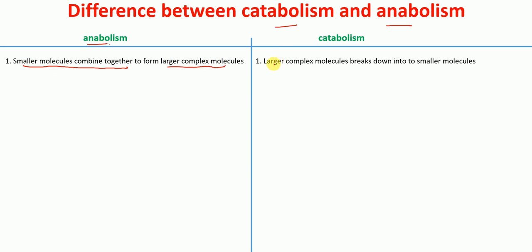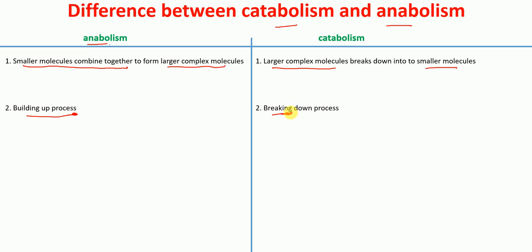Whereas in catabolism, larger complex molecules break down into smaller molecules. Anabolism is a building up process where small molecules combine to form larger complex molecules, whereas catabolism is a breaking down process where larger molecules break down into smaller molecules.